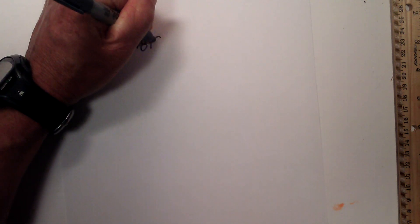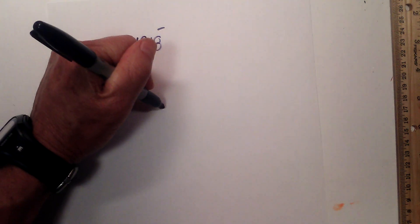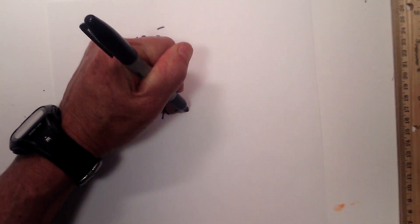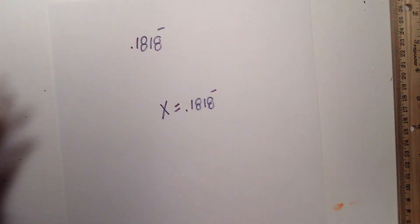How about one in which you have 0.1818 repeating. Let's do the same thing. First, x is equal to the repeating decimal, 1, 8, 1, 8 repeating.